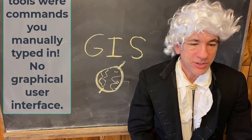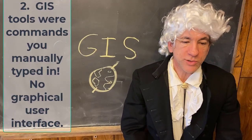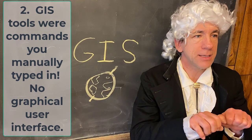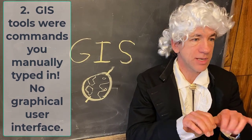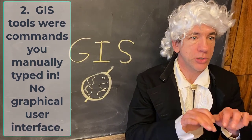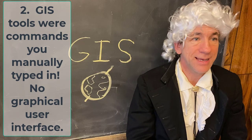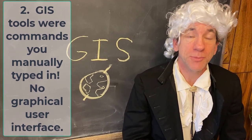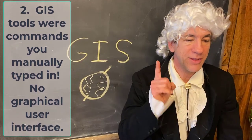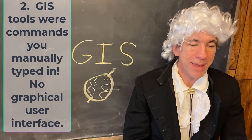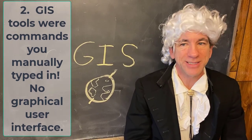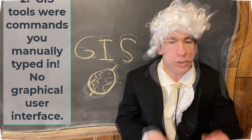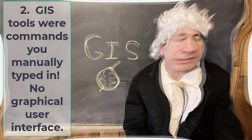Number two: GIS tools were command-line driven. You had to type in commands like 'map scale one to five hundred thousand' or 'map color four' — which was blue back then because you had a 12-color workstation monitor. Whether in ARC Info, Idrisi, or any other software, you actually had to type in these commands.